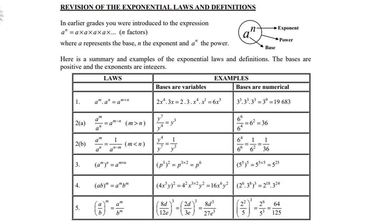Law number 2a: a to the power m divided by a to the power n equals a to the power m minus n, where we prefer m greater than n. For example, y to the power 7 divided by y to the power 4 is y to the power 3. Or 6 to the power 6 divided by 6 to the power 4 is 6 to the power 2, which is 36.